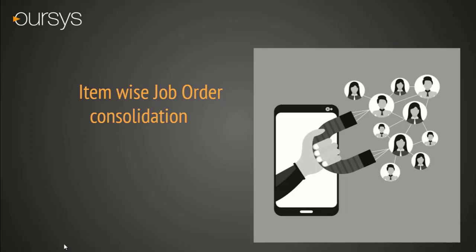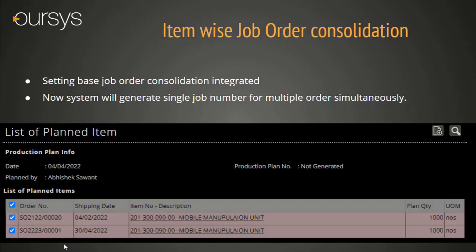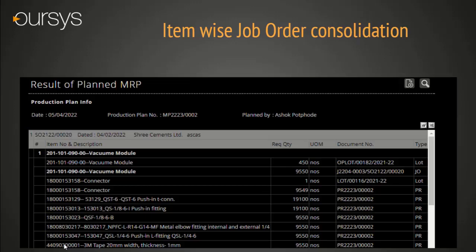Item-wise Job Order Consolidation. This is a setting-based functionality. In this feature, we have given the ability to create a single job document for multiple requirements. This function can only be used when a master BOM is used — it is not available when the Sales Order BOM provision is used. You can see that the system creates a single job order for multiple items.